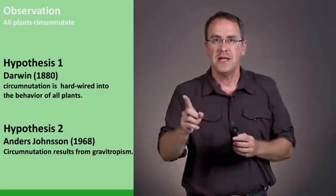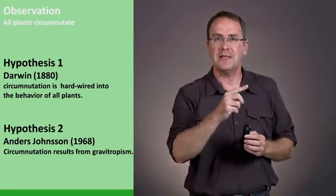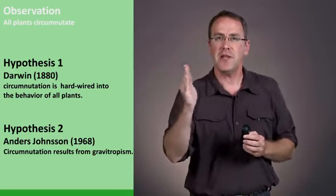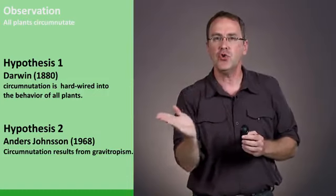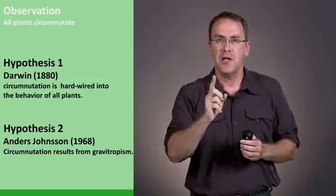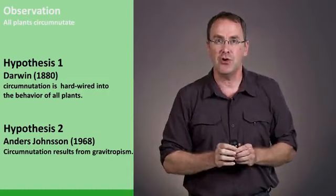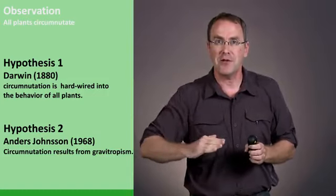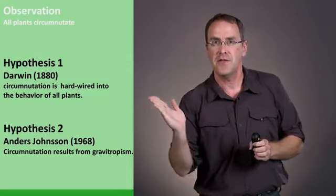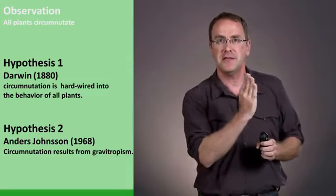In other words, the spiral movement of the plant is a result of plant growth overshooting where it should be. You might remember the first movie that we showed, showing that early plant gravitropism, the plant went like this, and then like this, and then like this.